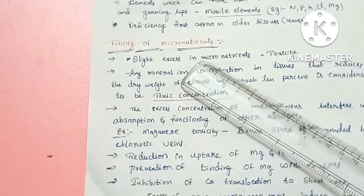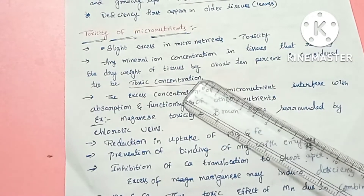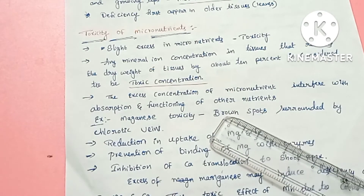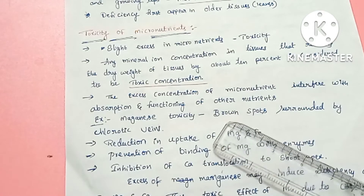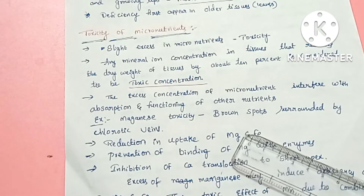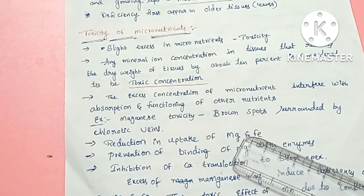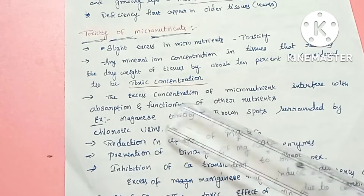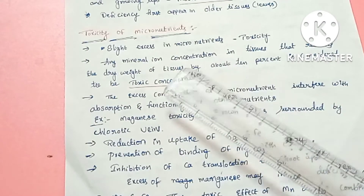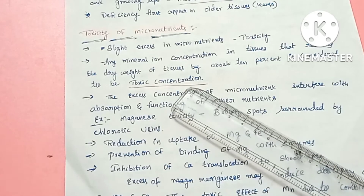The next topic is toxicity of micronutrients. A slight excess amount of several mineral elements can become toxic to plants. Any mineral ion concentration in tissue that reduces the dry weight of the tissue by about 10% is considered toxicity.